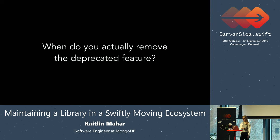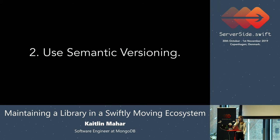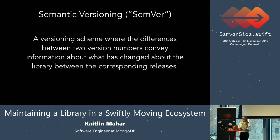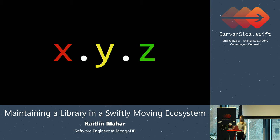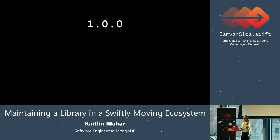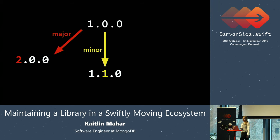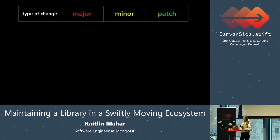So now we've talked about how you deprecate something, but when do you actually remove it? To answer that, we need to talk about semantic versioning. Semantic versioning is a scheme where the differences between version numbers convey information about what has changed. A version is in the format x.y.z, where x is the major version, y is the minor version, and z is the patch version. From 1.0.0: a major release goes to 2.0.0, a minor to 1.1.0, and a patch to 1.0.1.